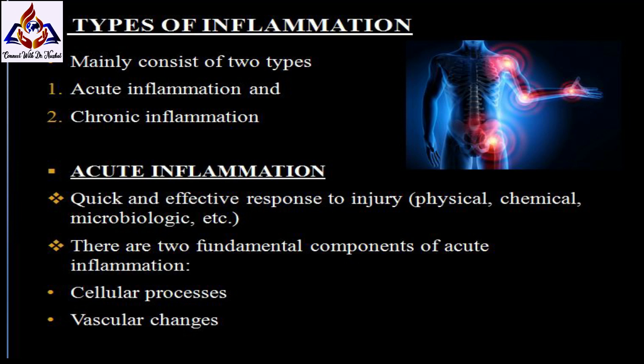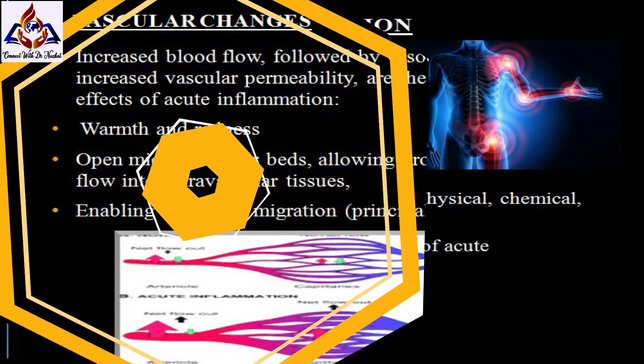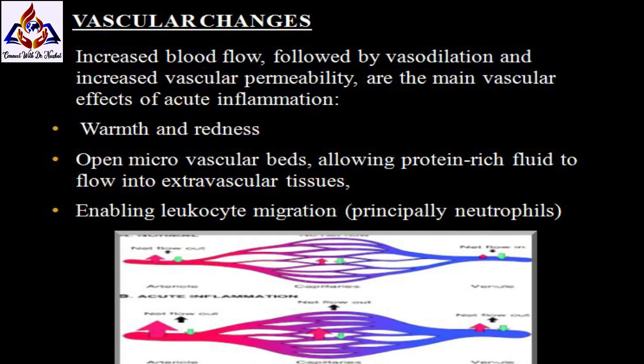Inflammation mainly consists of two types: acute inflammation and chronic inflammation. In acute inflammation, there is a quick and effective response to injury by physical, chemical, or microbiological agents. There are two fundamental components of acute inflammation: cellular processes and vascular changes.